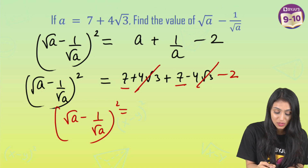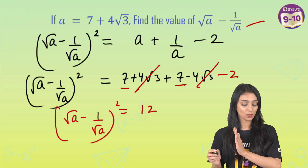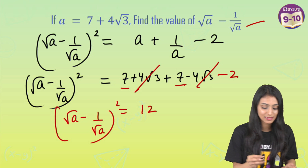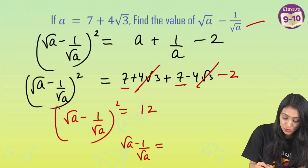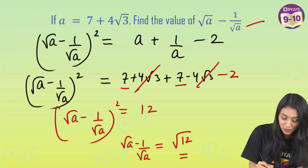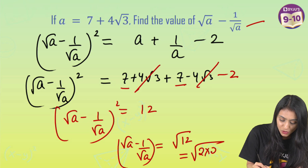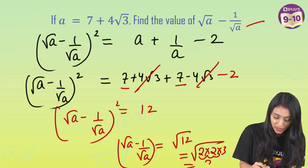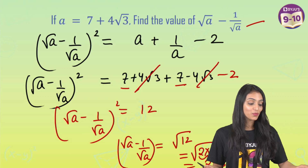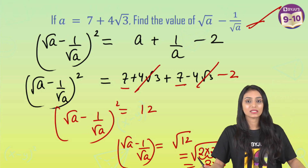So (root a minus 1 by root a) squared equals 7 plus 7 minus 2, which is 14 minus 2, which is 12. Taking the square root of both sides: root a minus 1 by root a equals root 12. Splitting 12 as 2 times 2 times 3, the pair of 2s comes out, giving the final result: 2 root 3.